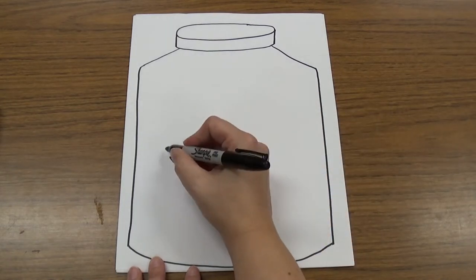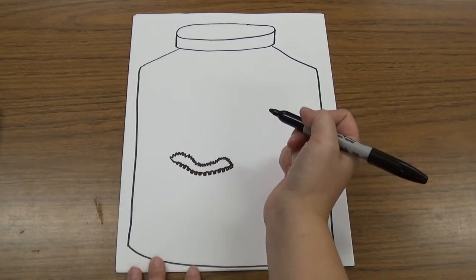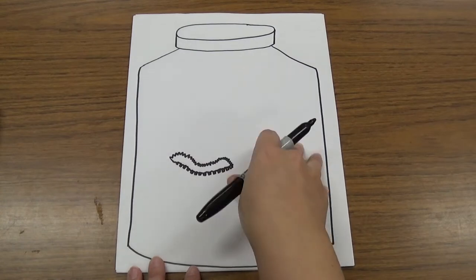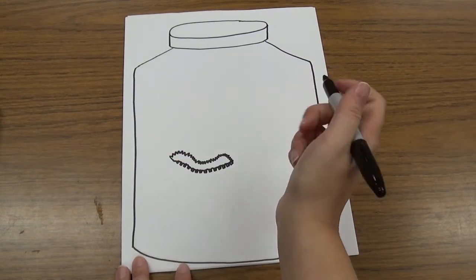Sometimes they have little antennas or things like that. If you want to add extra little details to your caterpillar, you can decide what you want it to look like.